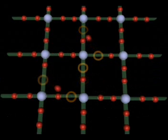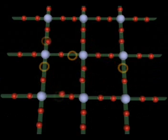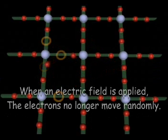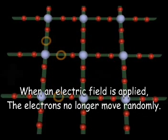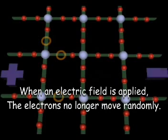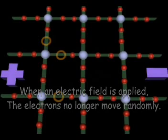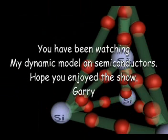The electron hole movement throughout a semiconductor is random. However, if an electrical field is applied, the electrons are urged to fill the holes, so that the holes move in the direction of the current, whilst the electrons move in the opposite direction, filling in the holes. This concludes my dynamic presentation.